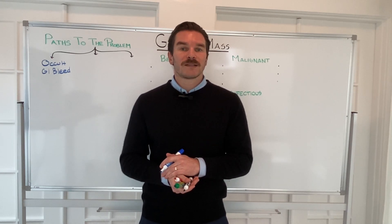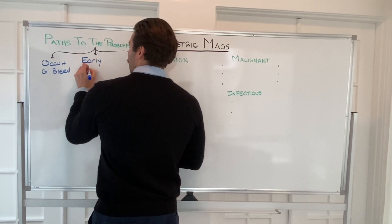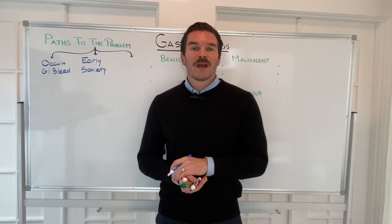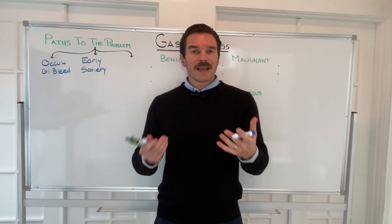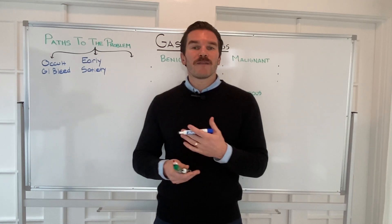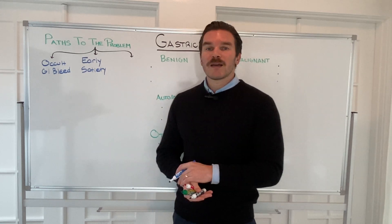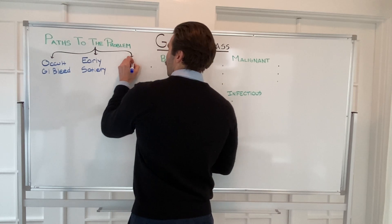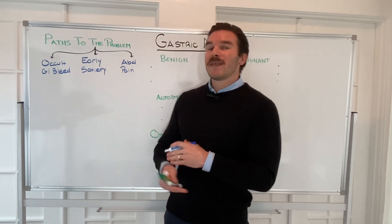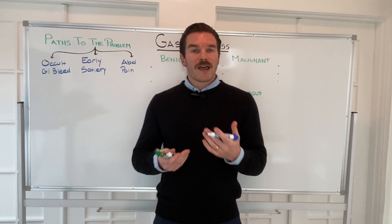The second symptom gastric masses can cause is early satiety. Abnormal proliferation of tissue takes up space within the gastric lumen, leaving less volume for food when we eat. Individuals with gastric masses may find they feel full very quickly. The third thing masses can do is cause pain, as abnormal tissue can stretch and compress nearby structures.